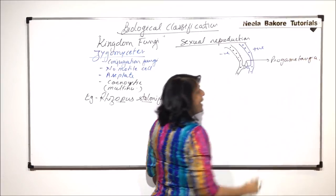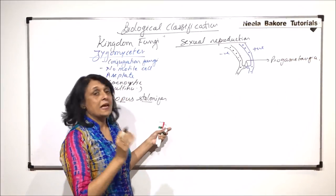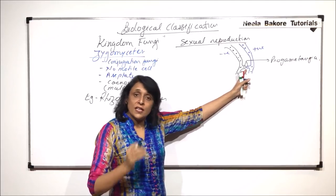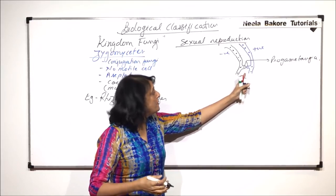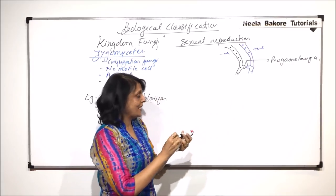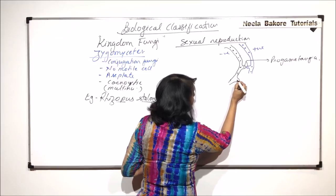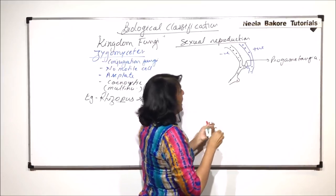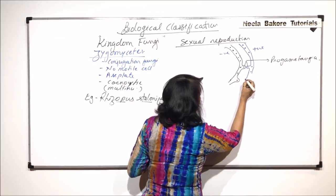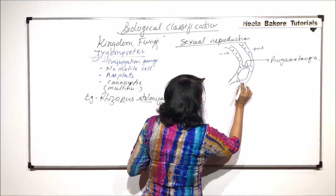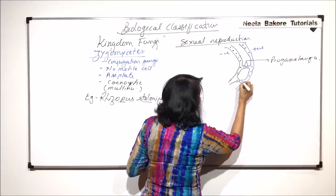These are the ones which are going to act like the gametes. Now, as I said, it is going to happen at the same place. So here itself, next step. But we will show the next step in the next slide. So now what happens is, this was the progametangia. There was a nucleus here. And of this hypha also, this was the progametangia. And one nucleus here, other nuclei are as it is.